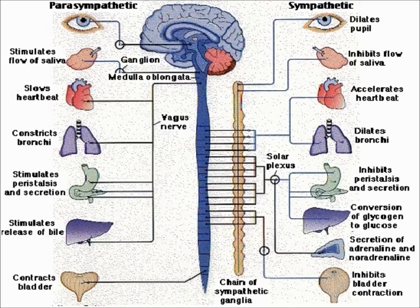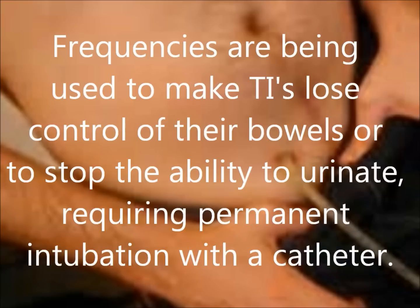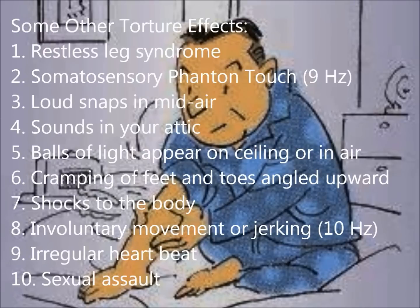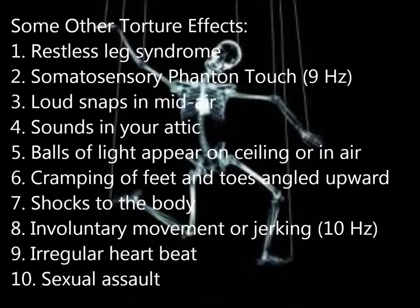It is possible to control the organs of the parasympathetic and sympathetic nervous system with frequencies. Frequencies are being used to make targeted individuals lose control of their bowels or to stop the ability to urinate, requiring permanent intubation with a catheter. Some other torture effects are restless leg syndrome, points of pressure walking on your bed, loud snaps in mid-air, sounds in your attic, balls of light that appear on the ceiling, cramping of feet and toes angled upward, shocks to the body, involuntary movement or jerking, irregular heartbeat, and sexual assault.